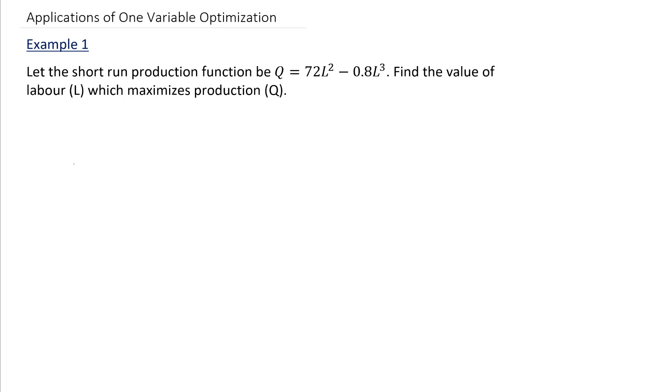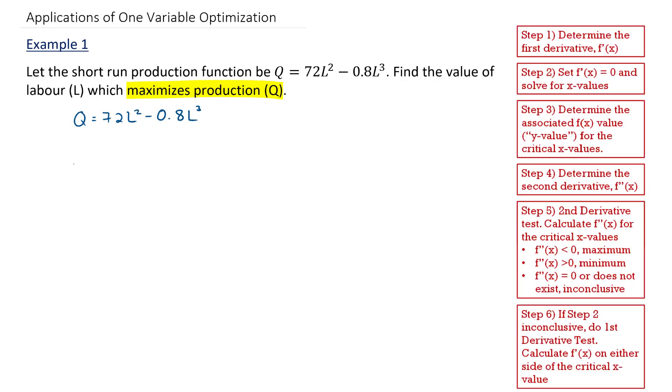So here we're dealing with an optimization problem where we're trying to maximize production. Our production equation, Q equals 72L squared minus 0.8L cubed, is what we're trying to optimize by finding that maximum coordinate. To determine this coordinate, I'm going to use the process that we outlined in the previous set of videos.